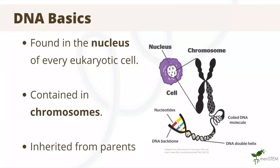In eukaryotes, DNA is found in the nucleus, where it is stored and packaged into thread-like structures known as chromosomes, which we can see in the presented diagram. These are found in almost every one of your cells, and these chromosomes contain genes and are inherited from your parents, which is why you look similar to both of them.